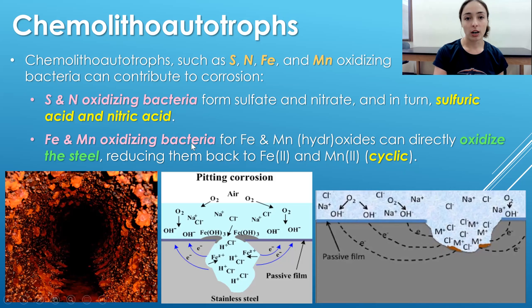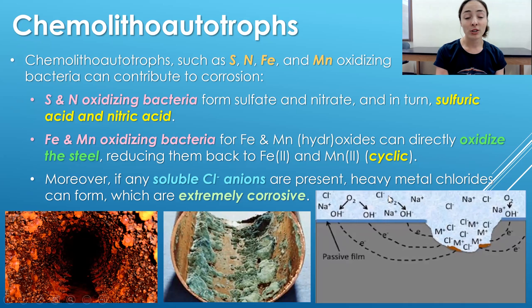Additionally, if soluble chlorine anions are present in the environment, heavy metal chlorides can form as byproducts of what these bacteria produce. Because heavy metal chlorides are extremely corrosive, their formation just continues to amplify the overall corrosion.